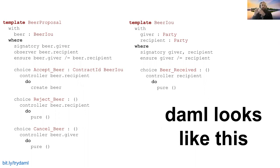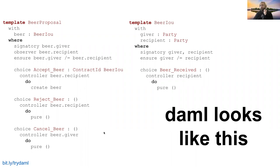There's no real worrying about race conditions here because DAML is a UTXO-based piece of software that essentially makes sure there can't be any conflicting state - everything is nice and atomic. Another interesting property is that the giver and recipient situation prevents automatically assigning obligations. For instance, I can't automatically say I owe Aaron something - Aaron has to agree that I owe him that thing. That really helps avoid issues where people may end up having obligations they didn't intend.